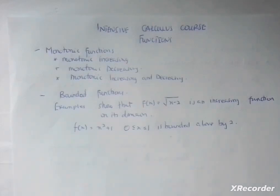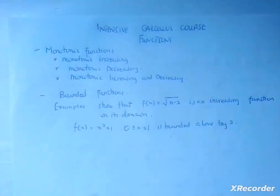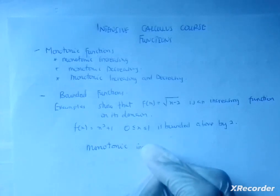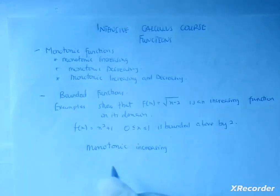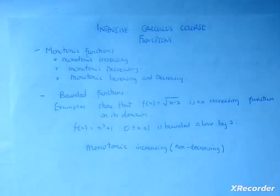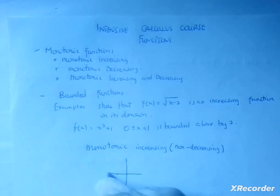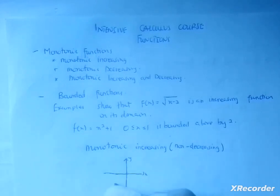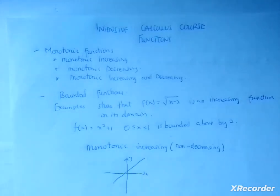Monotonic functions — the name itself tells us something. 'Mono' means one way. So if a function is monotonically increasing, it increases and never decreases. A monotonic increasing function is also called a non-decreasing function. If you have axes y and x, a monotonic increasing function will increase and never stop increasing.